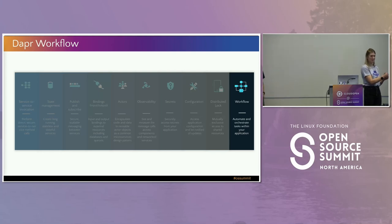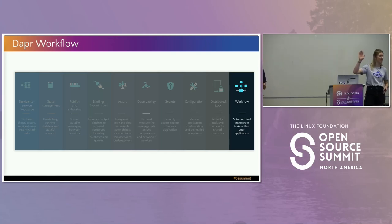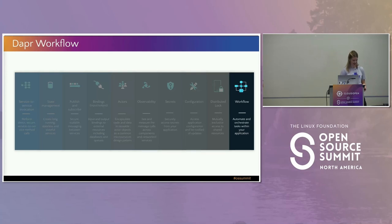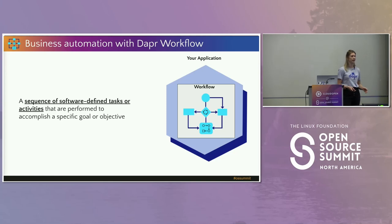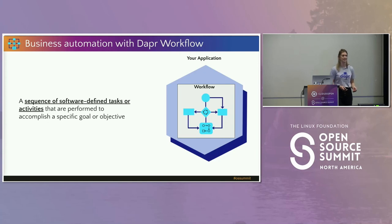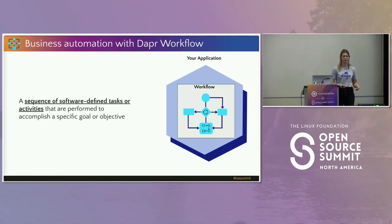You're some of the first people hearing about this feature because it's pretty much brand new in Alpha. This is the first talk we've done on Dapr workflows. So, a workflow is a business process that has a series of activities or tasks that we want to execute in a particular order. In the case of Dapr workflows, we're bringing it to the software-defined level — essentially a sequence of software-defined tasks or activities executing in a particular order to accomplish a particular business goal.